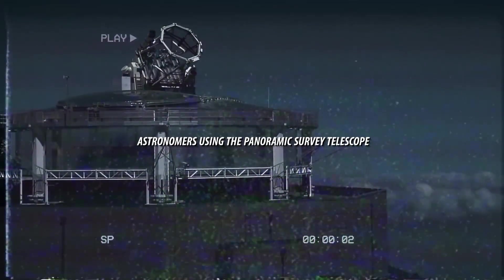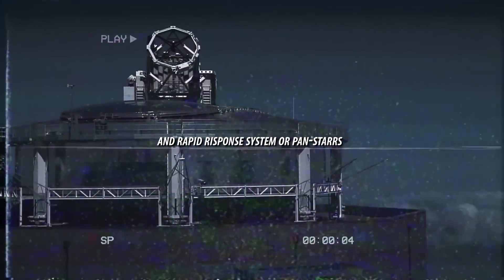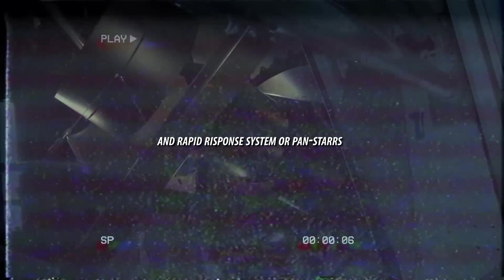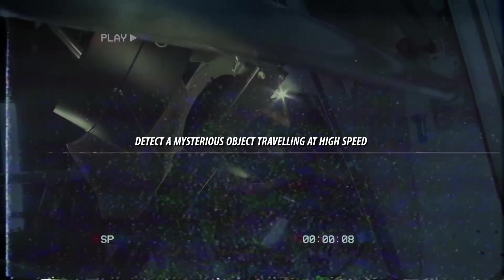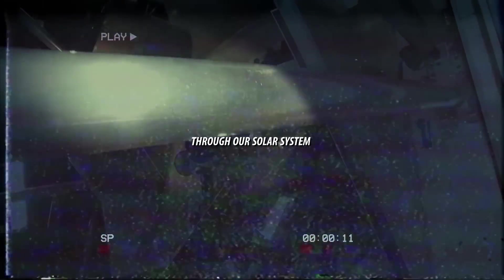Astronomers using the Panoramic Survey Telescope and Rapid Response System, or PANSTARS, detect a mysterious object traveling at high speed through our solar system.